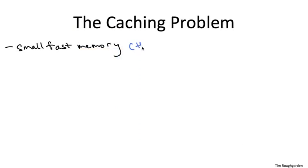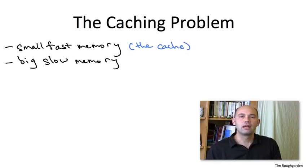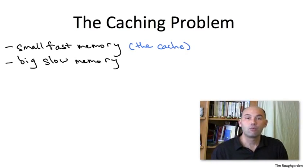So what is the caching problem? Well, on the one hand, there's going to be a big but slow memory, which you can think of as holding everything you might be interested in. But then there's also what we call a cache. And so this is a much smaller memory to which access is much faster. So this situation comes up all the time across different domains of computer science: architecture, operating systems, networking.